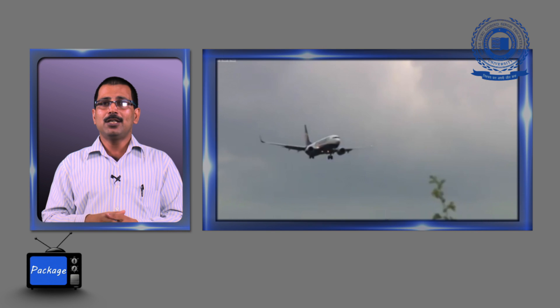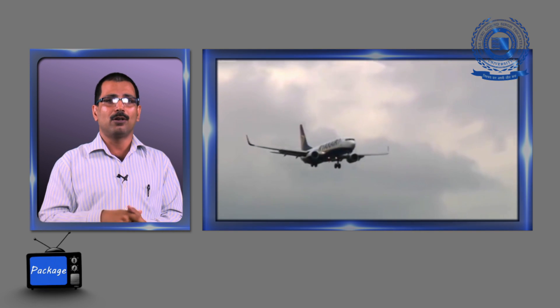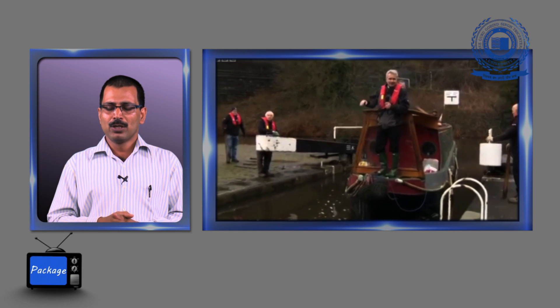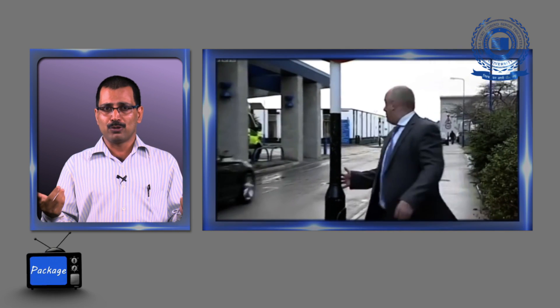This should be the proper format for a package. There are various sections in a package, but there is no rule that there shall be only two or three voiceovers — there may be four or five voiceovers. There has to be a final VO. Apart from that, there may be a piece to camera, that is P2C, at the start or end. That is why it is called a package — you give complete information of a story. The bites should be balanced; you cannot give only one side. Both sides of information should be given in a package — that is why it is called complete information.